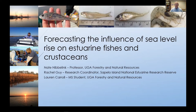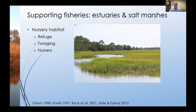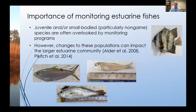Today I'm going to share a little bit about our work that is ultimately aimed at forecasting the influence of sea level rise on estuarine fishes and crustaceans and ultimately the food web that depends on them. Estuaries and the incredible salt marsh complexes that constitute a major part of those systems are highly productive environments which provide essential habitat for recreational, commercial, and non-game fishes and crustaceans, including refuge, foraging opportunities, and as an important nursery habitat.